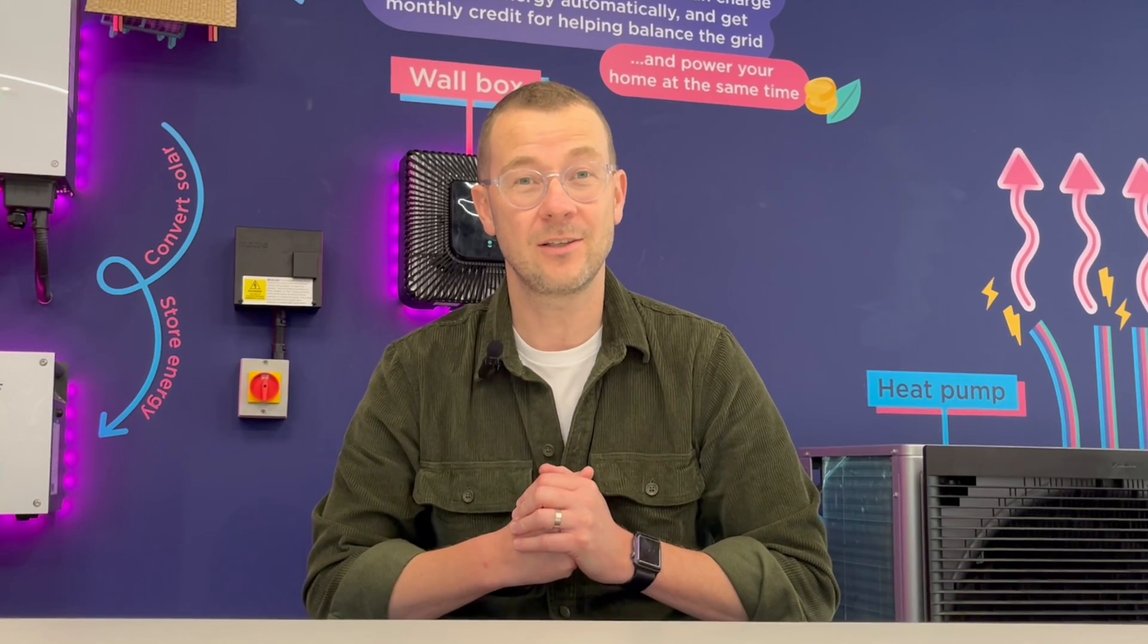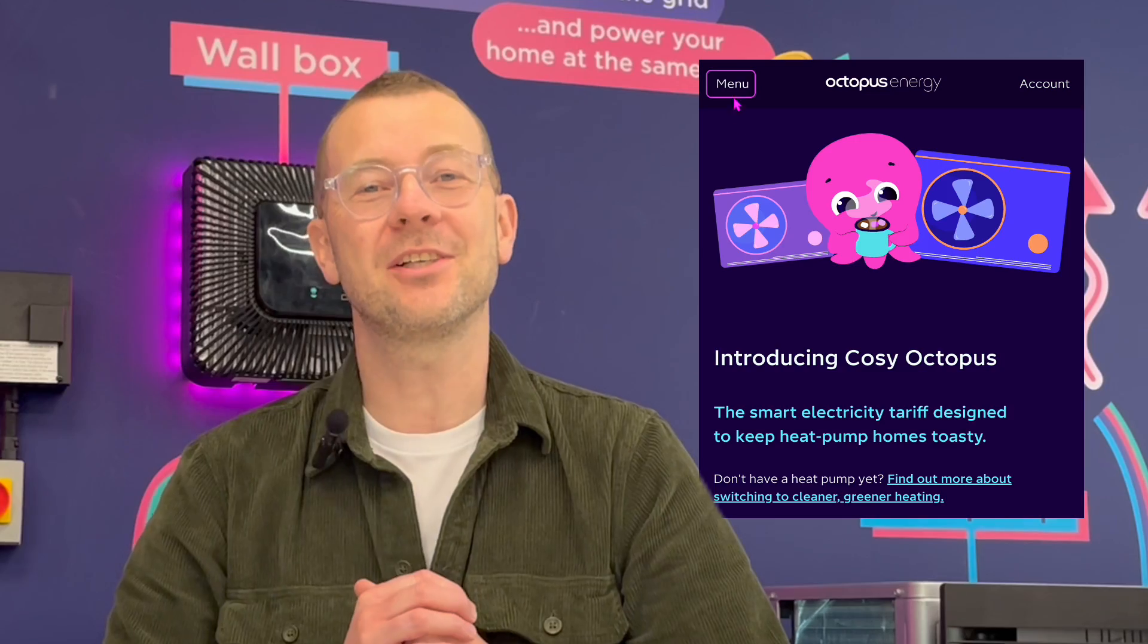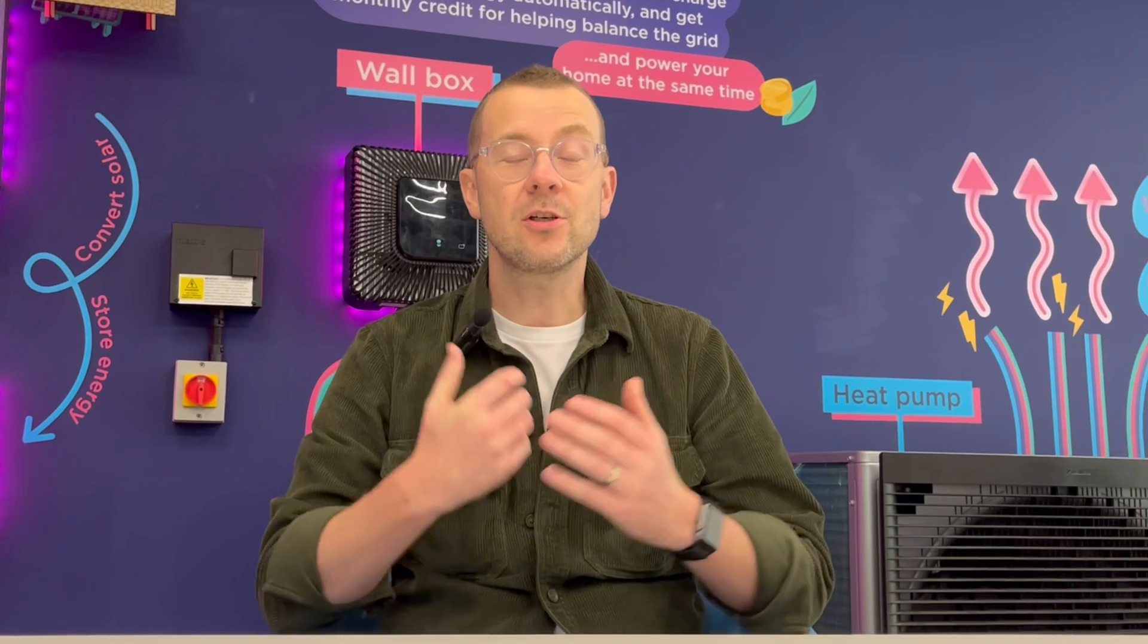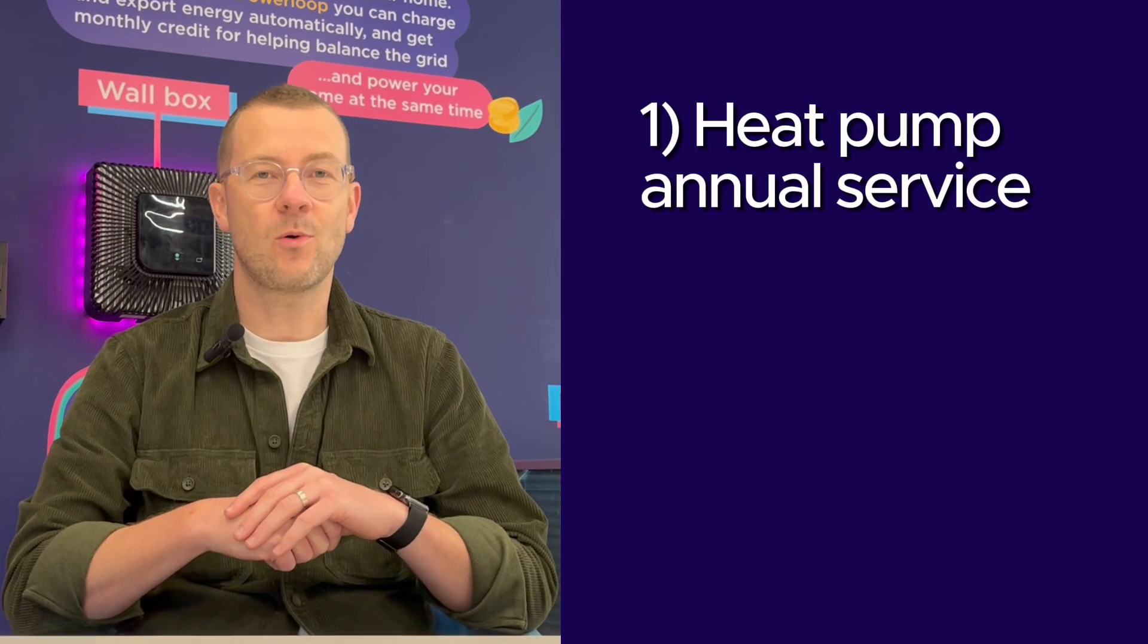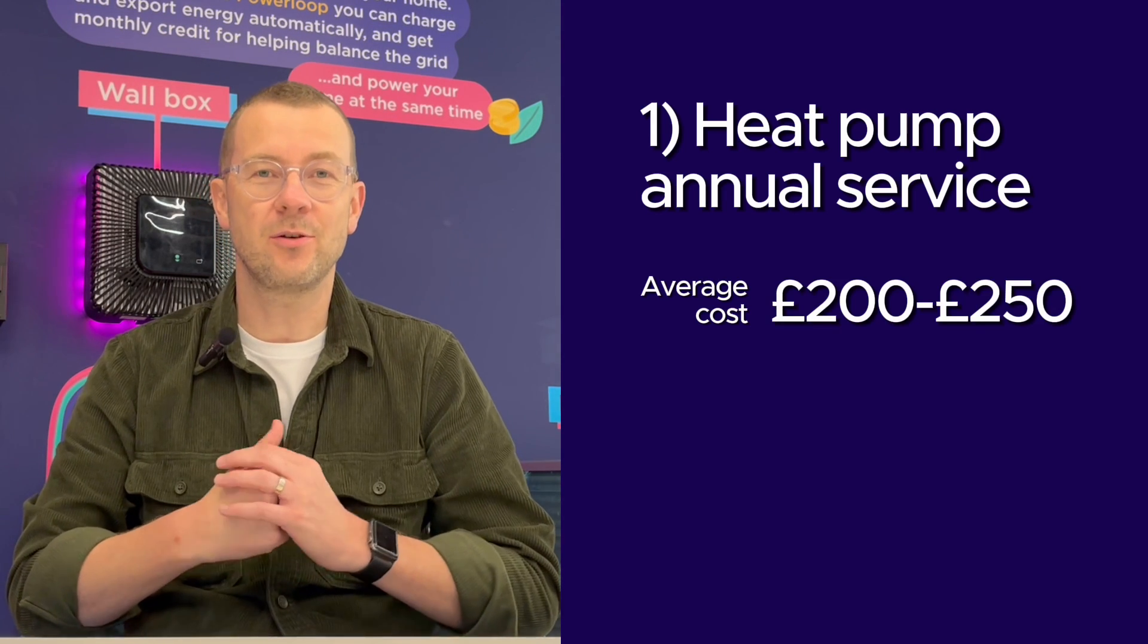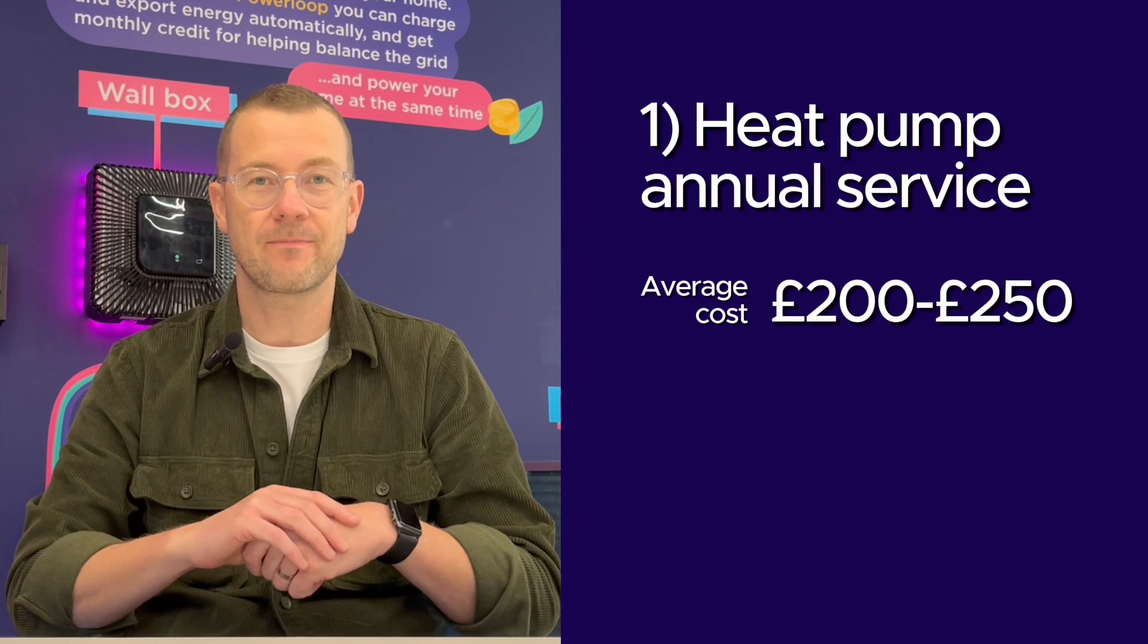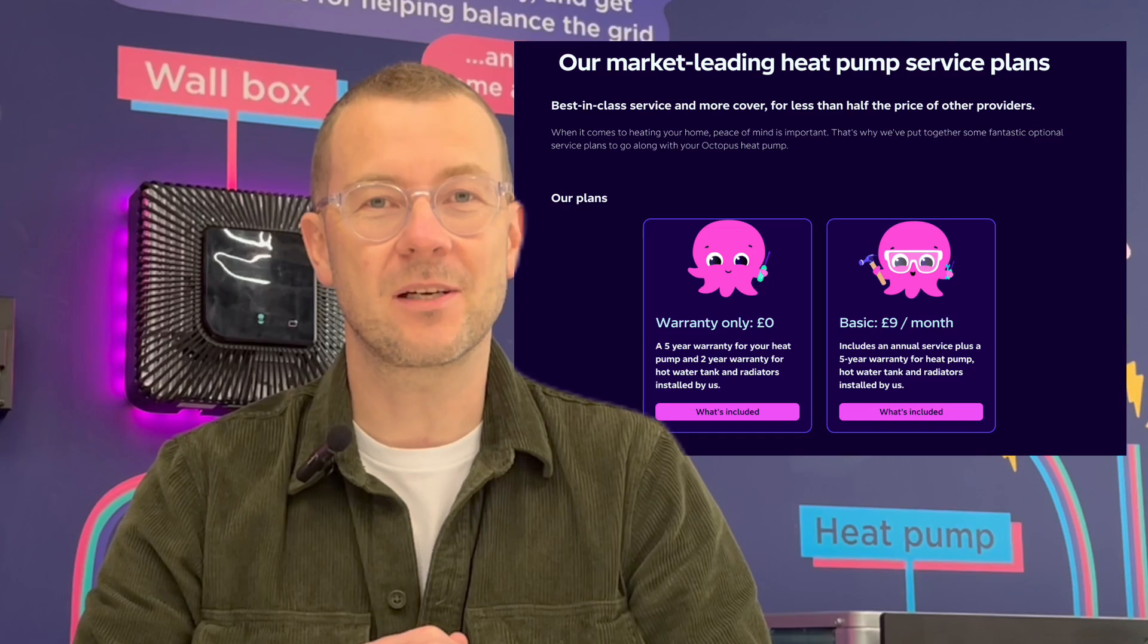And as I mentioned earlier, you can further reduce these prices if you have other green energy tech such as a battery. For a full breakdown of these costing calculations, head over to our blog. Now let's talk about other costs and savings associated with running a heat pump. Just like boilers, your heat pump will need to be serviced annually by a professional to make sure it's working at optimum efficiency. An annual service will typically cost around £200 to £250 and most installers will offer maintenance plans. However, a service plan with Octopus is up to half that price. You can get more details on our website.